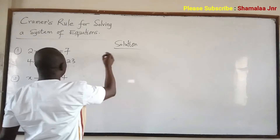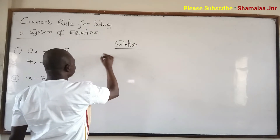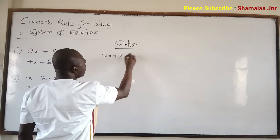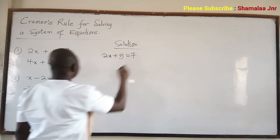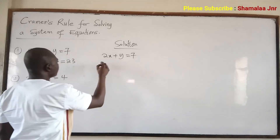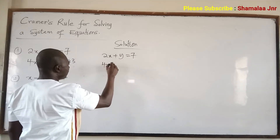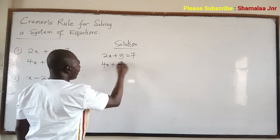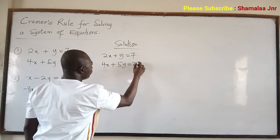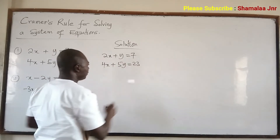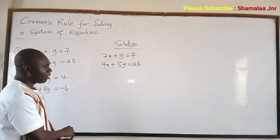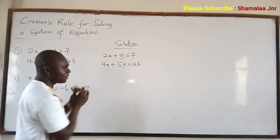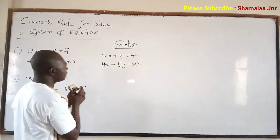Now let's look at the first system of equations: 2x plus y is equal to 7, and 4x plus 5y is equal to 23. Now, Cramer's rule is how it works. This is a system of two equations.